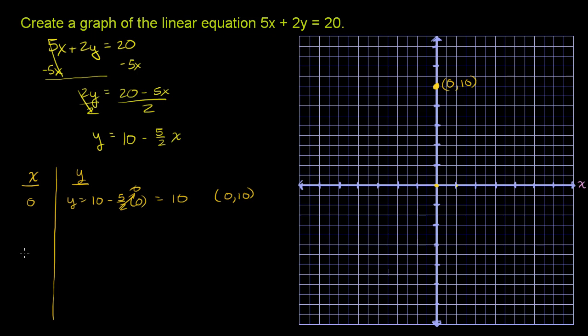Let's do another point. Let's say that x is 2. I'm going to pick multiples of 2 here just so that I get a nice clean answer here. So when x is 2, then y is equal to 10 minus 5 halves times 2. And the 2 in the denominator cancels out with this 2 in the numerator. So it simplifies to 10 minus 5, or just 5.